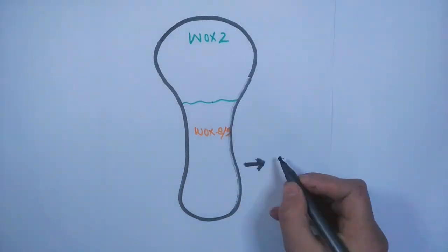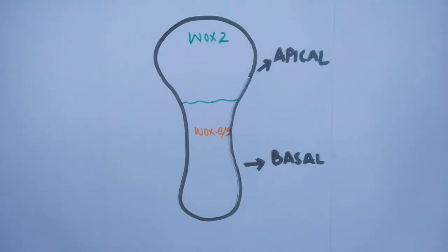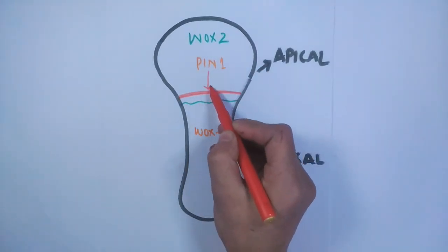In order to understand the expression of WOX and PIN proteins, we see WOX8/9 expression is on the basal side while WOX2 is on the apical side. Then there is PIN1 proteins which form a continuous layer in between the apical and basal boundary, thus governing auxin transport.